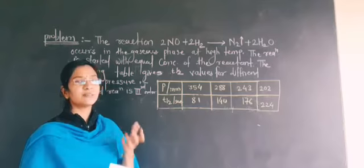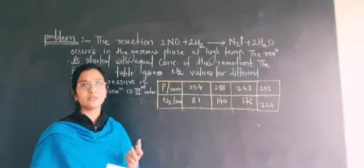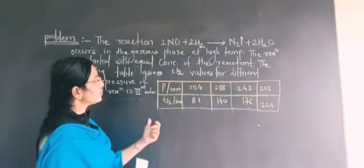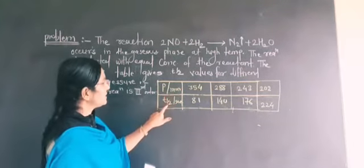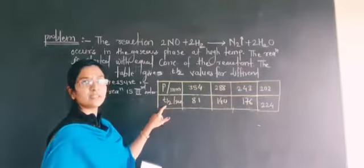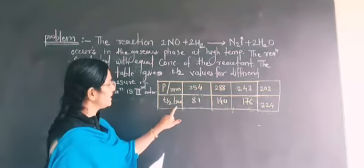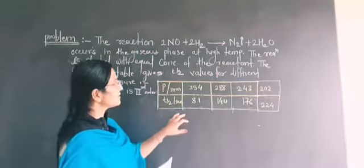It's very simple to understand how to solve this numerical. Now look at the table. The pressure is given with the unit of millimeters and T1/2 half-life period for the third order reaction is given in seconds. Then let's look at that.